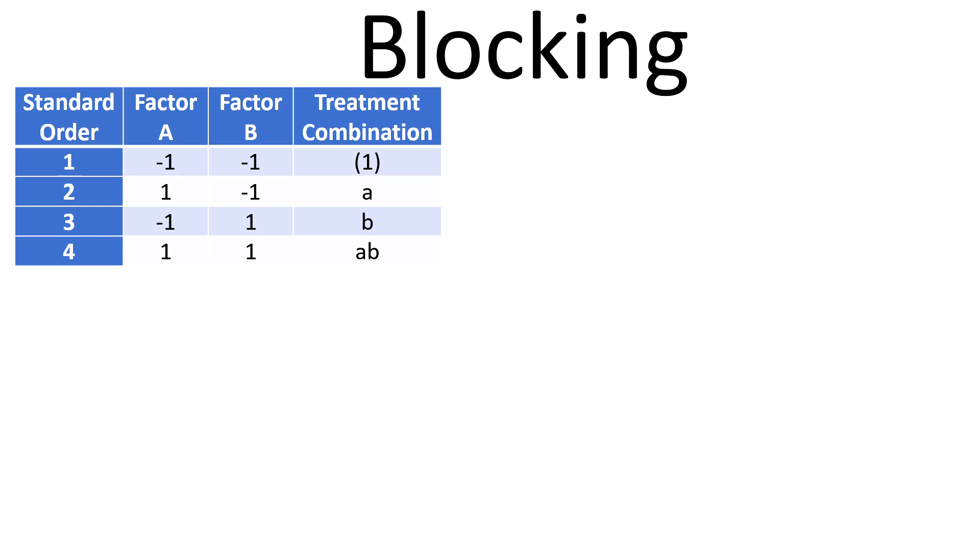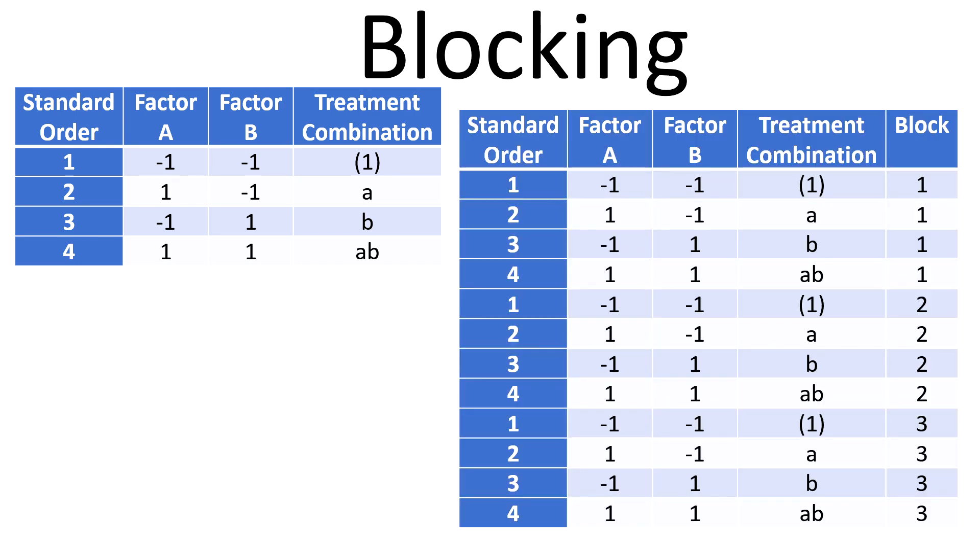Now if we need, let's say, three replications of this design and we can only make four samples from a homogeneous batch or from a process or place—we have limitations on the amount of raw material we can collect—so we can only collect four samples from each batch or process or place. If we need three replications we'll need three batches or blocks, and they are treated as blocks.